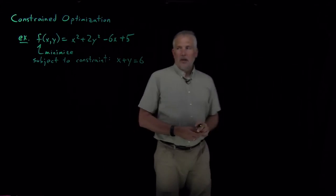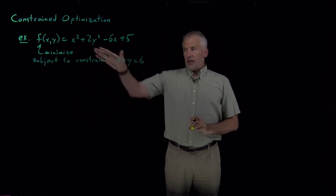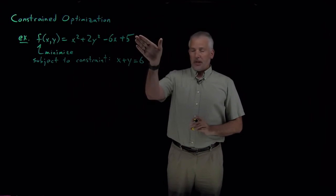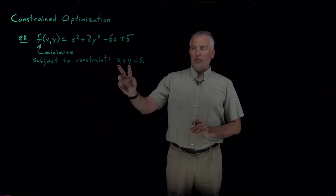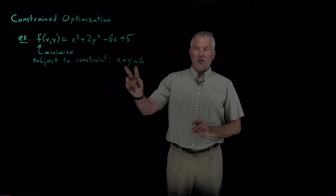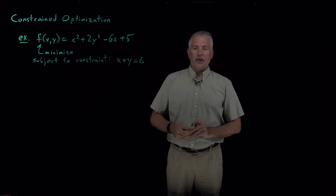We know there's a minimum of that function at 3, 0. At the minimum of that function, it doesn't obey the constraint. We want to find out of all the combinations of x and y that do obey this constraint, which of those gives the minimum value of the function.